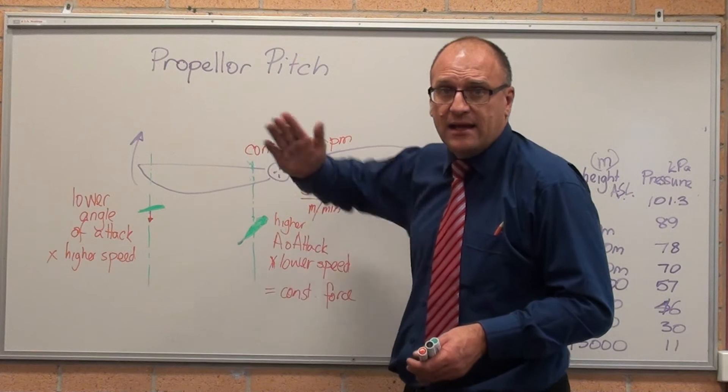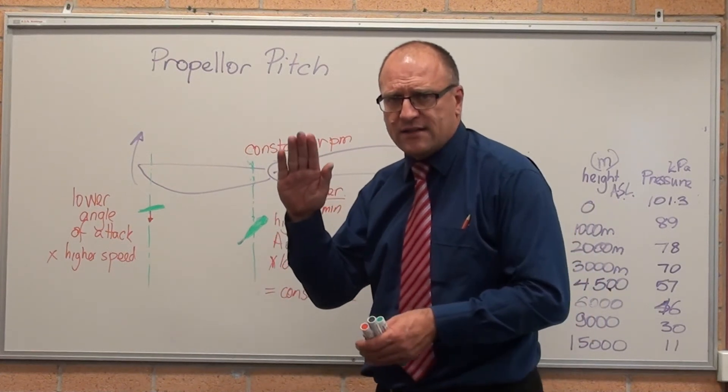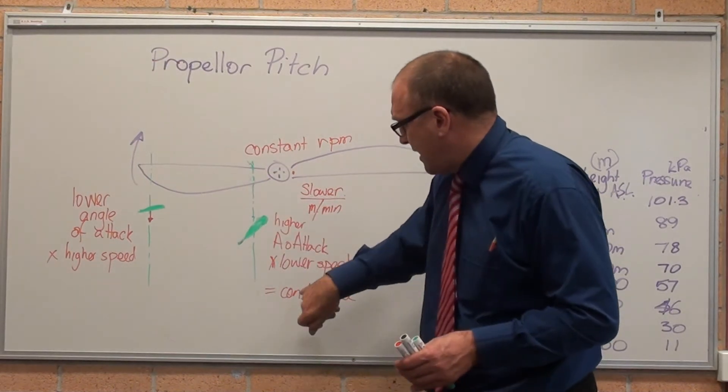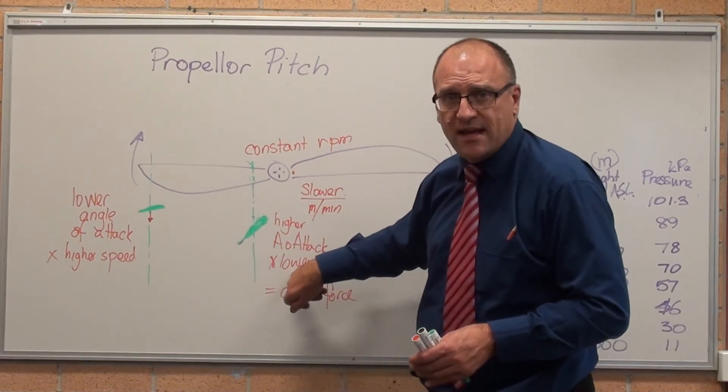Here in the centre of the propeller, it's pitched at a fairly high angle of attack to the wind. Because it's travelling slow, it's got a high angle of attack to generate high amounts of thrust.